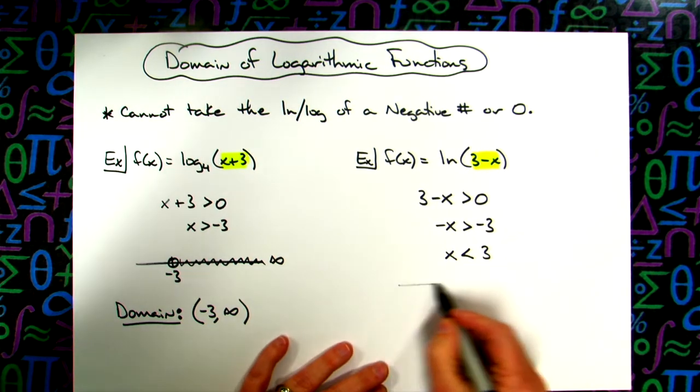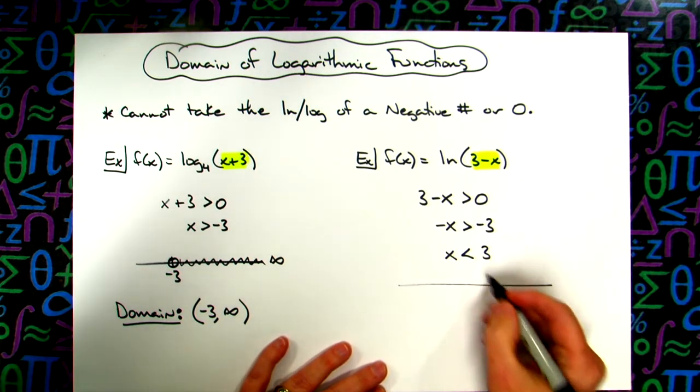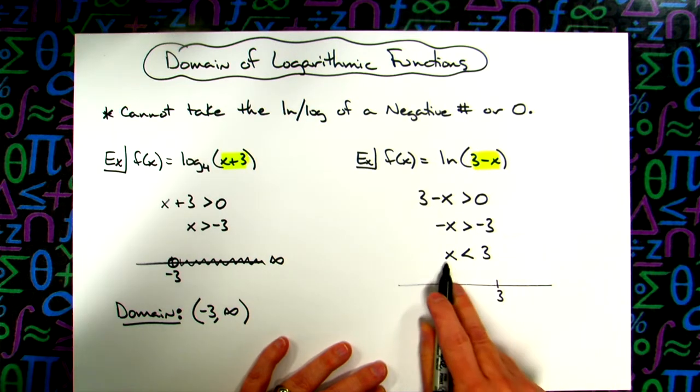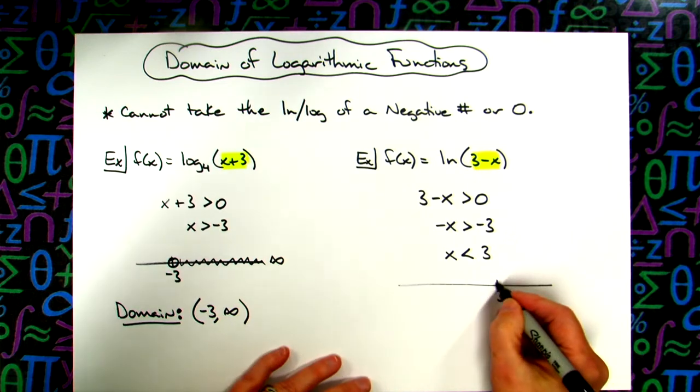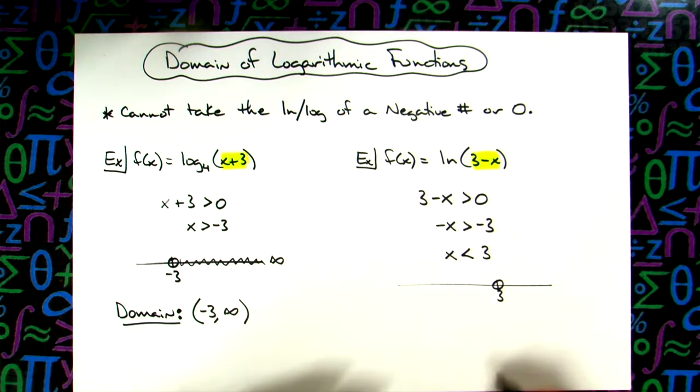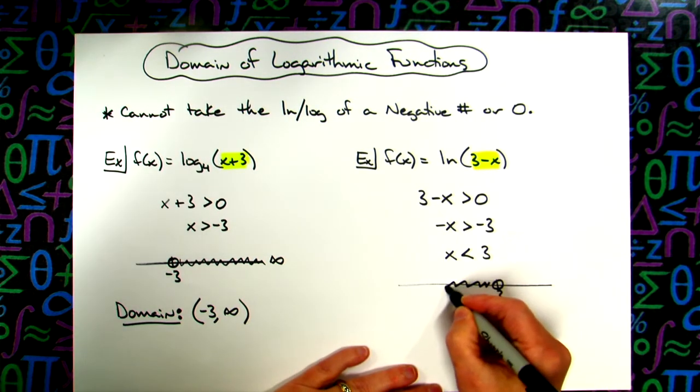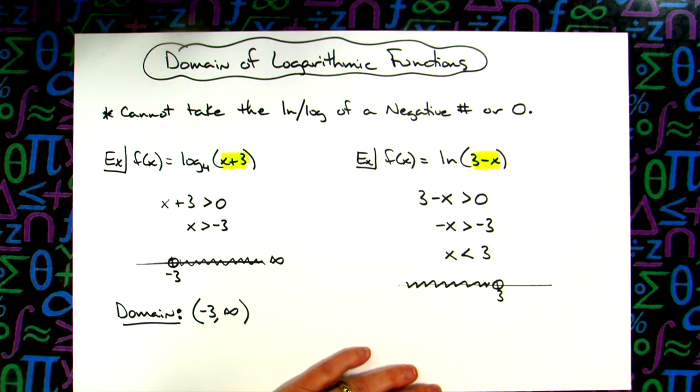So now if I look at this one from a number line standpoint, here's 3 on the number line. This says x has to be less than 3. It cannot equal 3. It has to be less than 3, so open dot there. But then any of the numbers that would be less than 3.